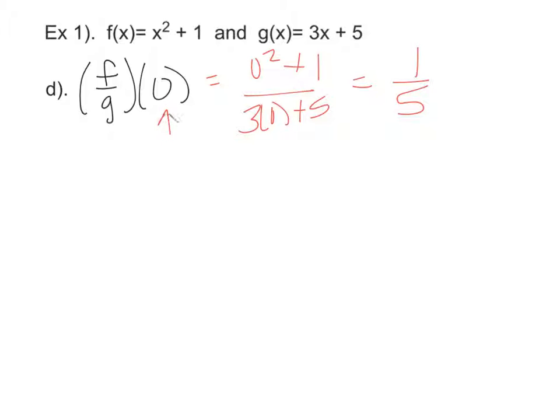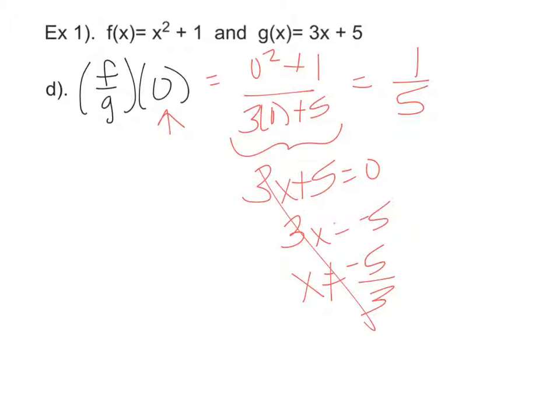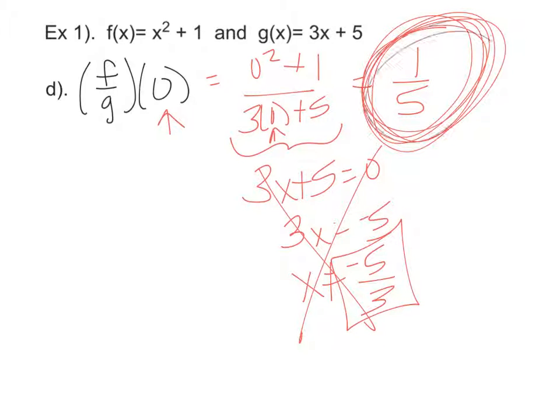Just because you're plugging in a value of 0 does not make a 0 in the denominator. You know, just for fun, what would make this value, the 3x plus 5, undefined if a 0 was in the denominator? You set that equal to 0, subtract your 5, divide by 3, and that is what makes it undefined. However, that's not really what we're looking at on this one, but I wanted to point out negative 5 thirds is different than plugging in a 0. Our answer for this problem is your 1 fifth.